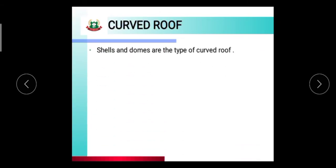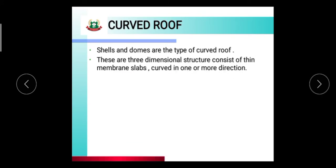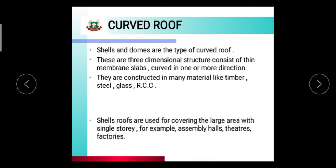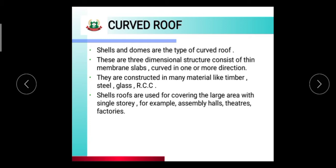Curved roof. Shells and domes are the type of curved roof. These are three-dimensional structures consisting of thin membrane slabs curved in one or more direction. They are constructed in many materials like timber, steel, glass, and RCC. Shell roofs are used for the covering of large areas with a single storey, for example assembly halls, theaters, and factories. This type of roof is called a curved roof and is mostly used in assembly halls, theaters, factories, etc.